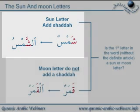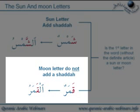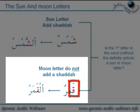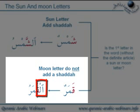Now let's contrast this with a moon letter. The rule is: if the first letter is one of the moon letters, we do not add a shadda when we prefix the word with the definite article. So here we have the word 'qamar'. Prefix it with the definite article — it becomes 'al-qammaru'. You look at the first letter; it's one of the moon letters. When we add the definite article 'al', we do not put a shadda on the letter — in this case the letter is qaf. So the 'al' is actually read as 'al', and a sukoon is put on top of the lam. This will be read as 'al-qammaru'.